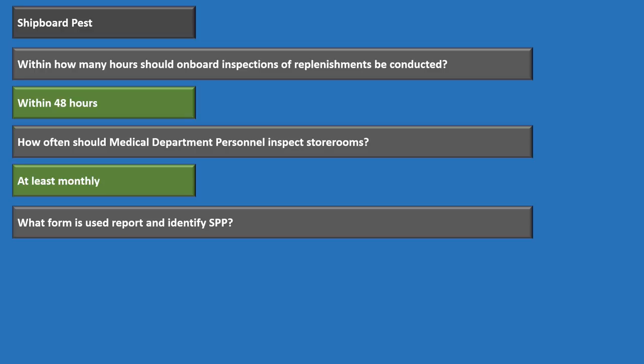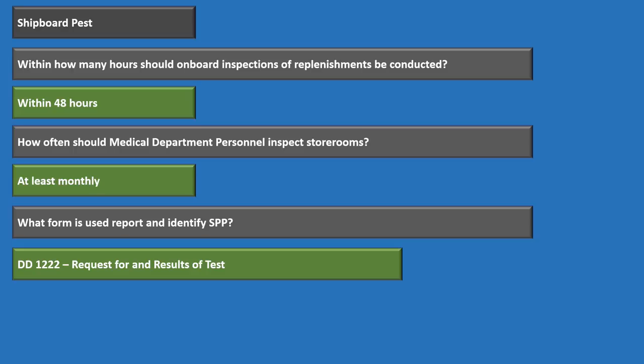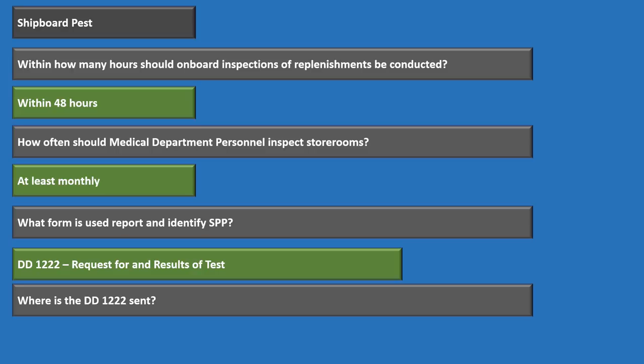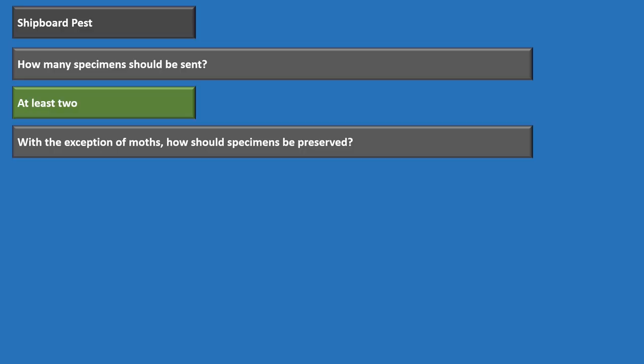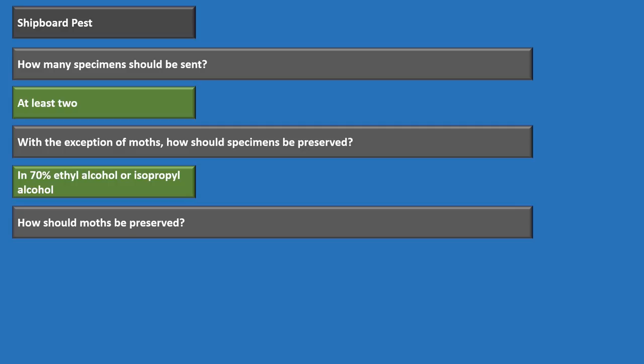The DD-1222 is sent to either a Navy Environmental Preventative Medicine Unit or the Navy Entomology Center of Excellence. Two specimens must be sent. With the exception of moths, specimens are preserved in 70% ethyl alcohol, or isopropyl alcohol if ethyl is unavailable. Moths are kept dry and stored in vials with no cotton.